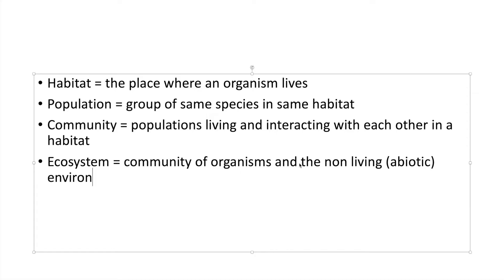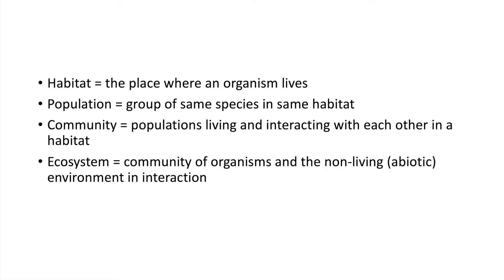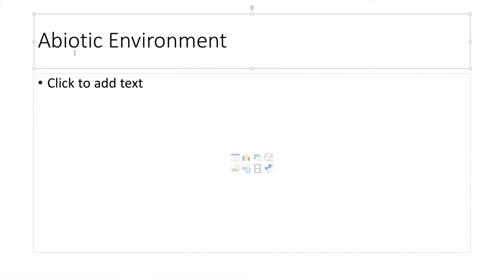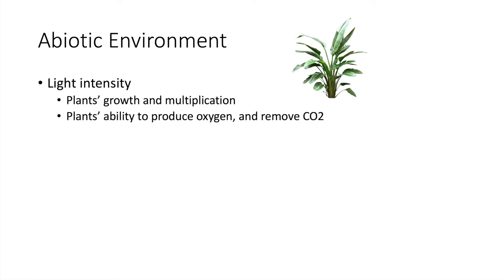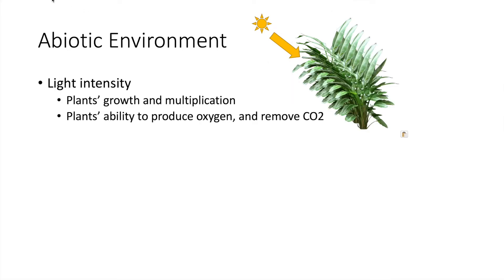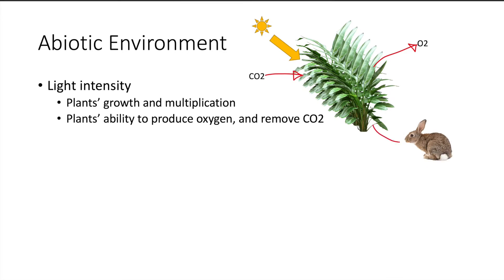Okay, so first we'll investigate the several factors of the abiotic environment that possibly can affect living things within them. Abiotic simply means the non-living component. For example, light intensity affects the ability of plants to photosynthesize and grow and thrive and multiply and also affects the ability of plants to provide oxygen into the environment. Also, with the flourishing of plant population, it will also affect the number of herbivores that you can support in the area.